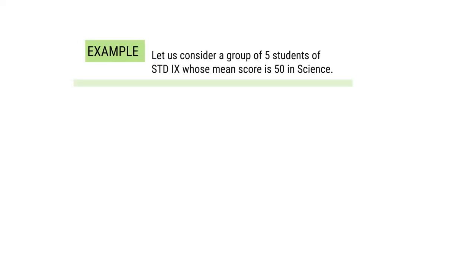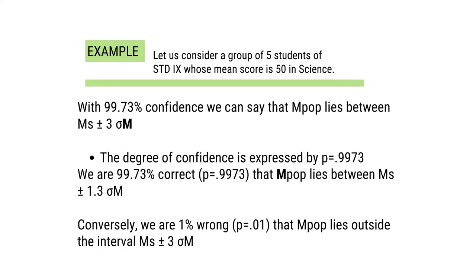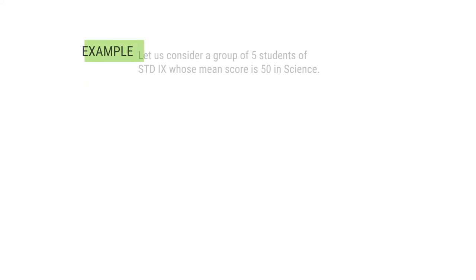With 99.73% confidence, we can say that the mean of the population lies within the sample mean plus or minus 3 sigma. The degree of confidence is expressed by P equals 0.9973. We are 99.73% correct that the population mean lies between sample mean plus or minus 3 sigma-m. Conversely, we are 0.27% wrong that the mean of the population lies outside the interval — sample mean plus or minus 3 sigma-m.